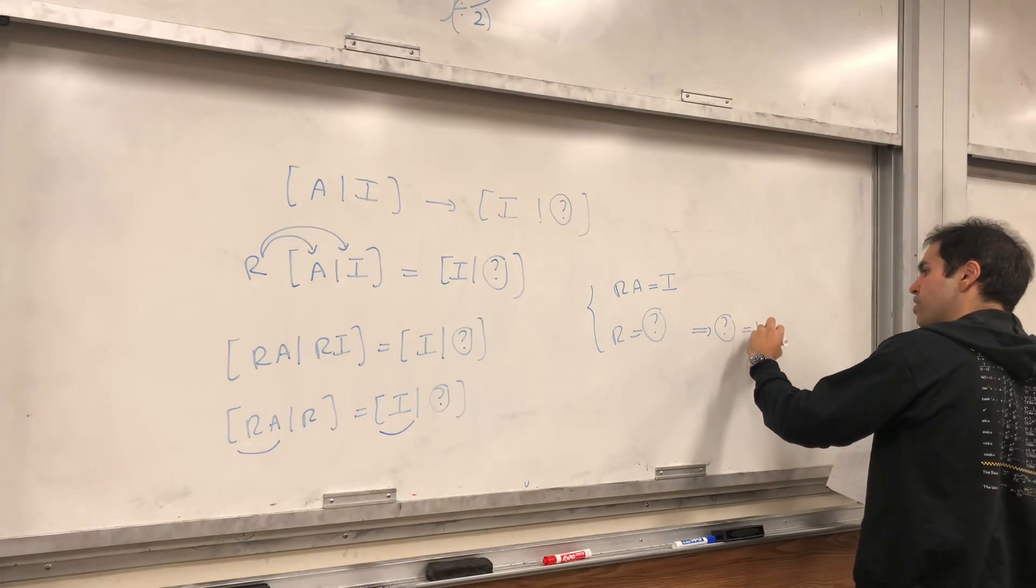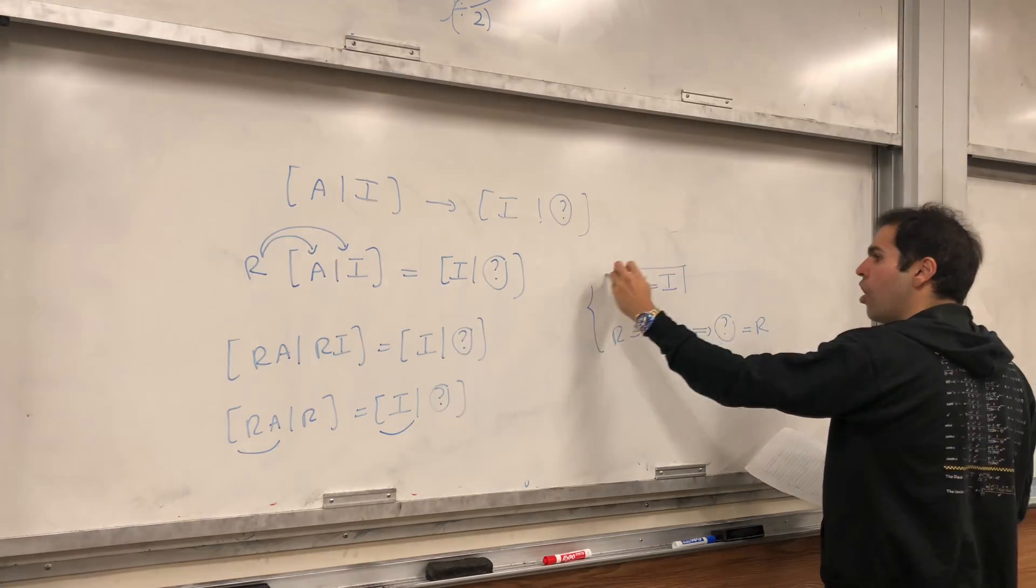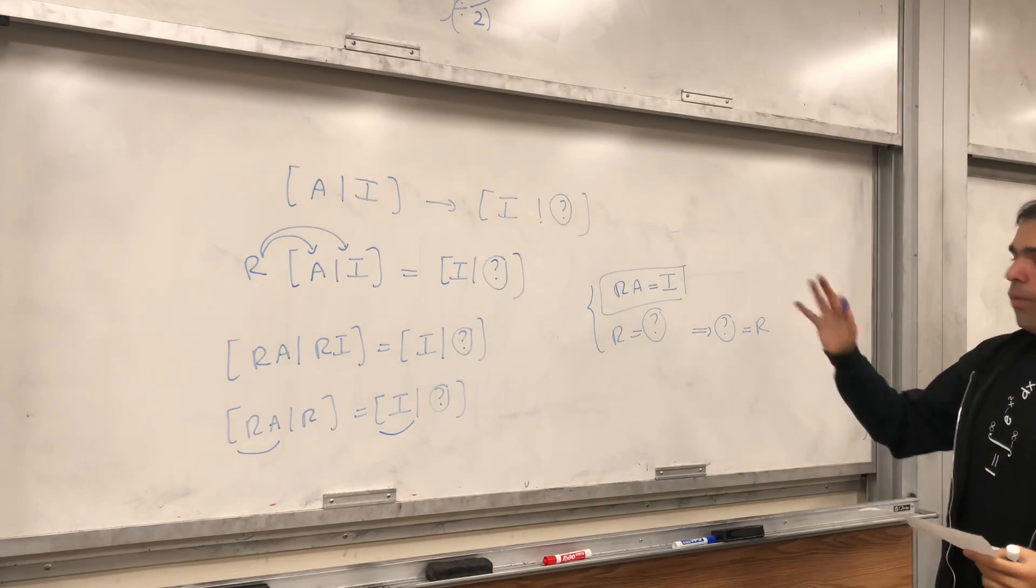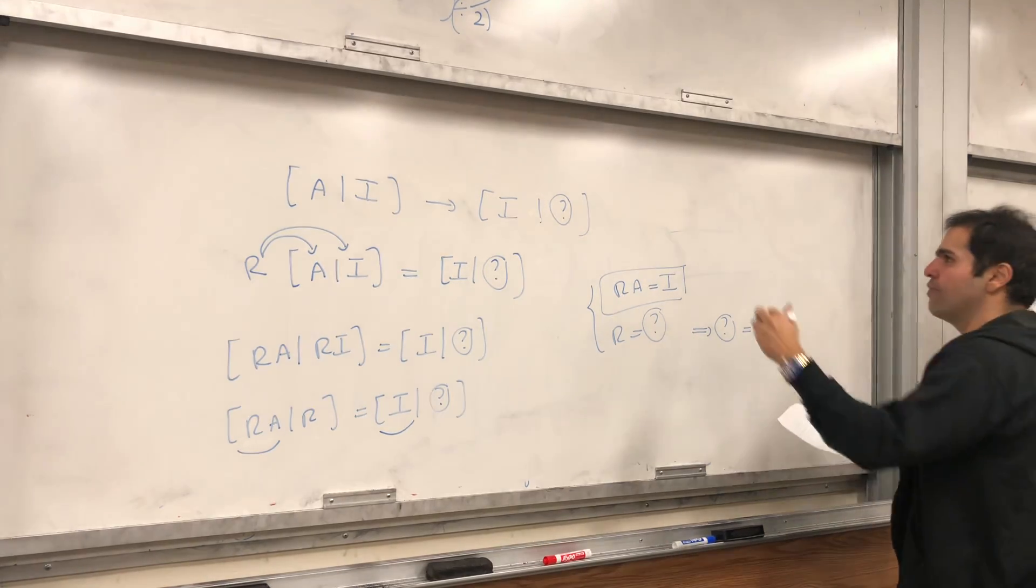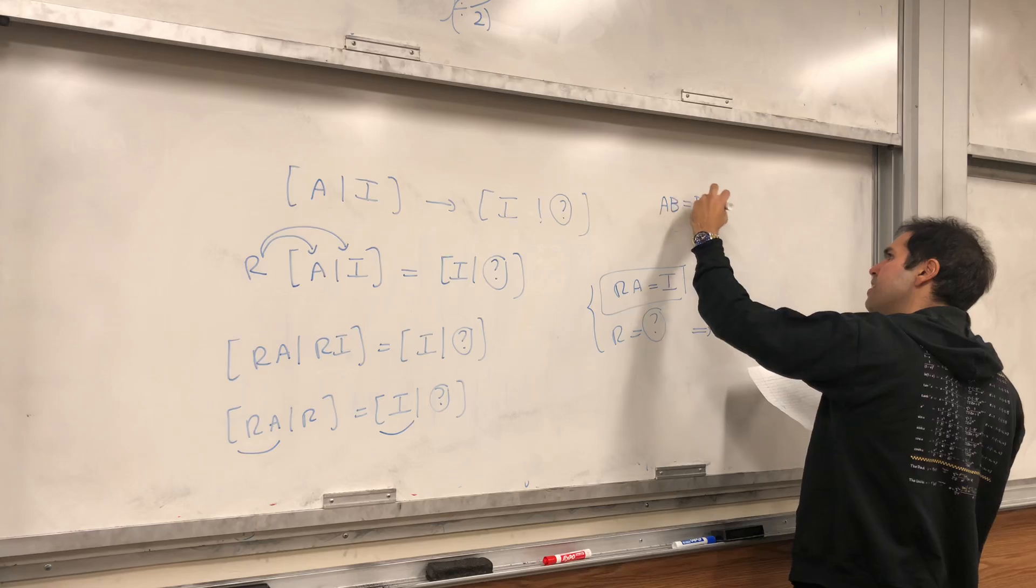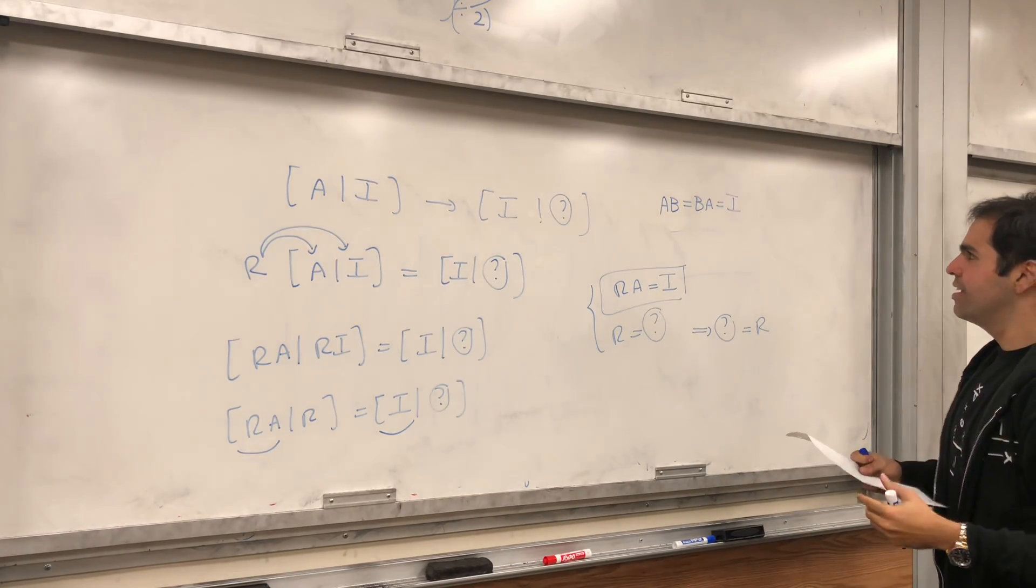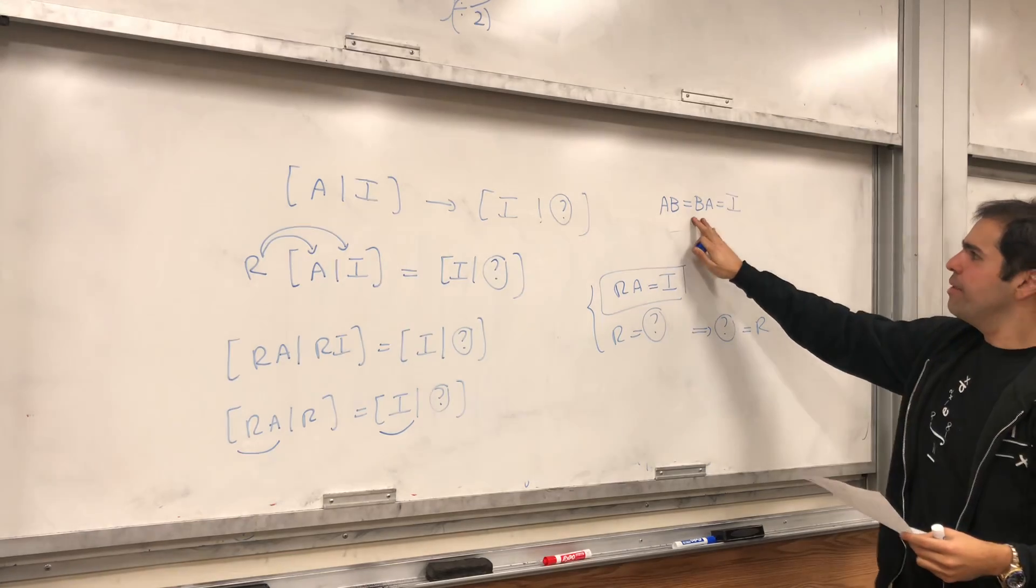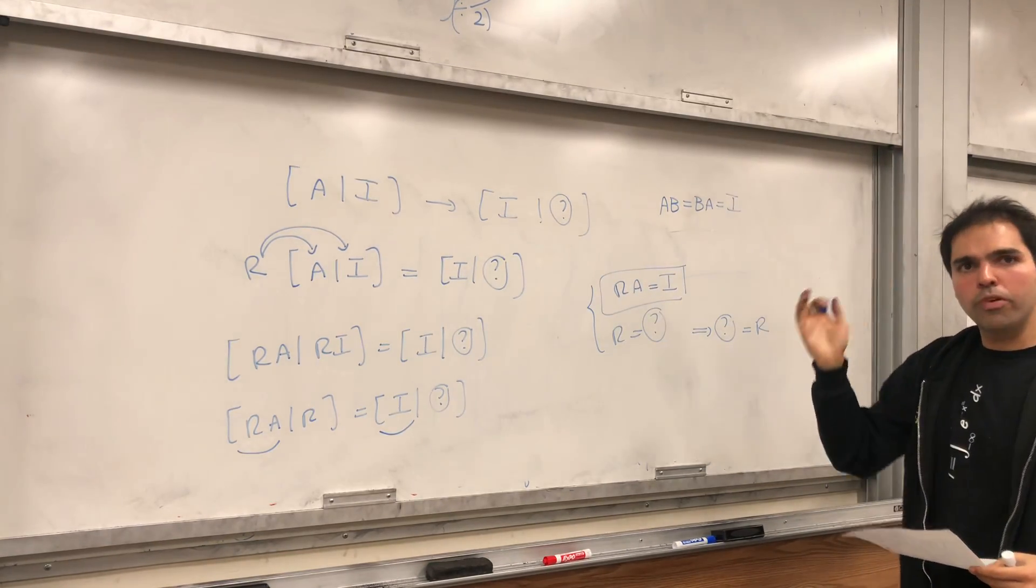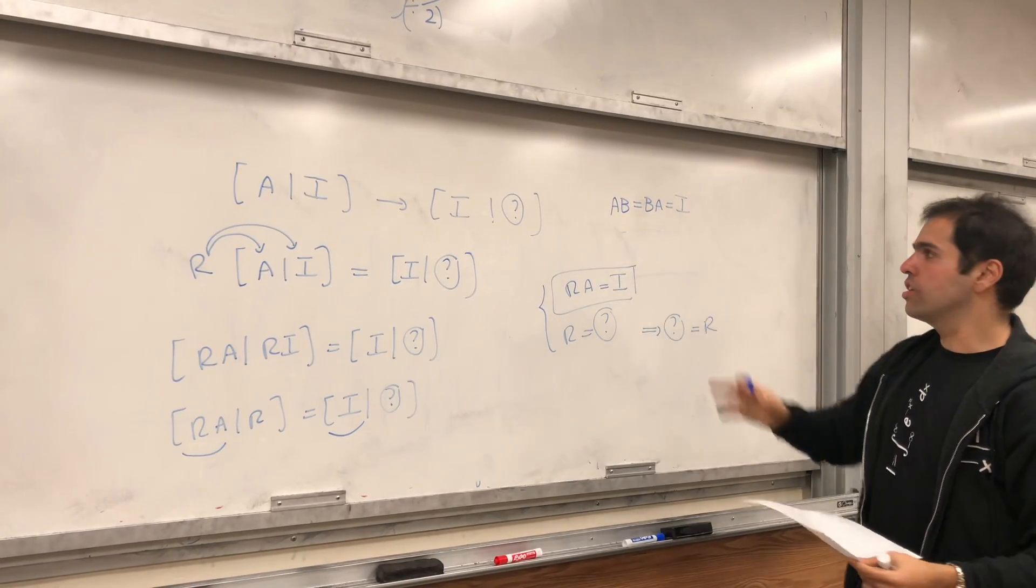And we want to show that question mark equals to A inverse. But look, R A equals to the identity. And what is the definition of A inverse? It really means it's some matrix B, such as AB equals to BA equals to the identity. But here's the thing. If the matrix is square, there's this thing called the invertible matrix theorem, which tells you,